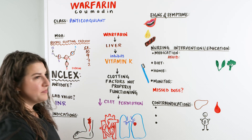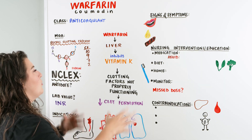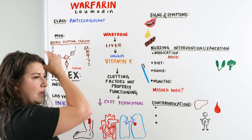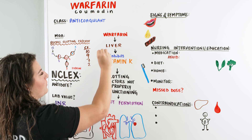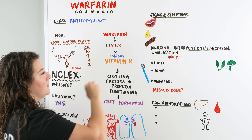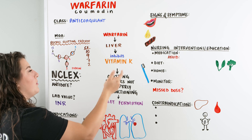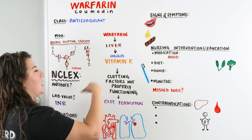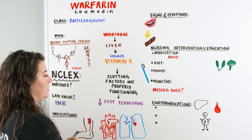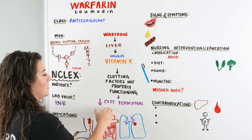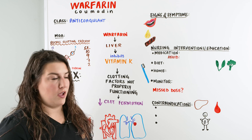We take warfarin into our body, it goes through the liver, and when it gets to the liver, a whole bunch of actions occur. Vitamin K can be reduced — basically, warfarin inhibits vitamin K. From there, vitamin K cannot properly allow these clotting factors to function, and therefore we have a decrease in clot formation, meaning a decrease in the production of fibrin.